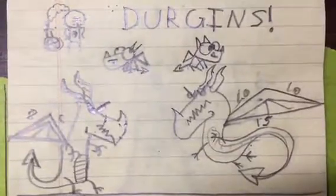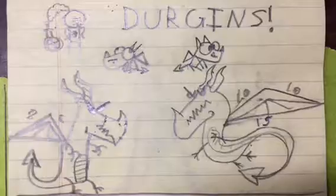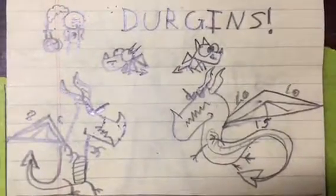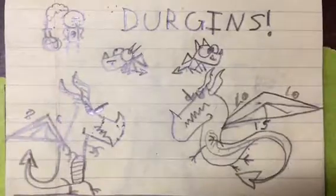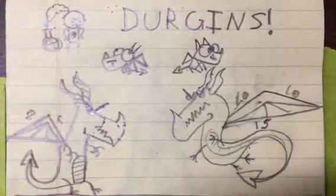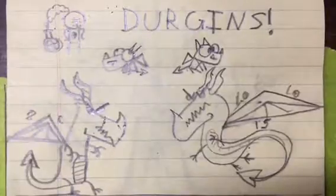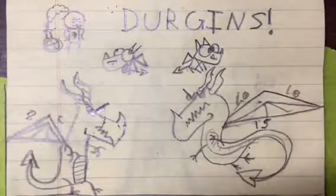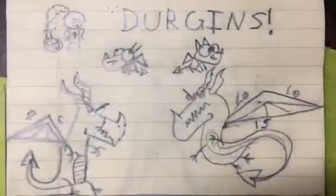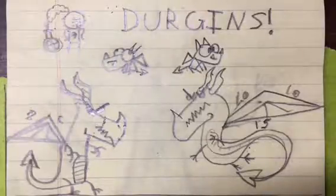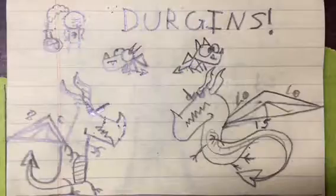He came upon some Durgans which do not at all in any way resemble any other magical creature and are unique to the Land of Geometry. The two Durgan mothers had lost their children and both blamed the other for the disappearance. Circumference, knowing that a war of Durgans would result in his and probably lots of people's deaths, decided to help.